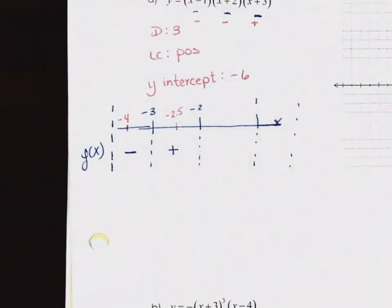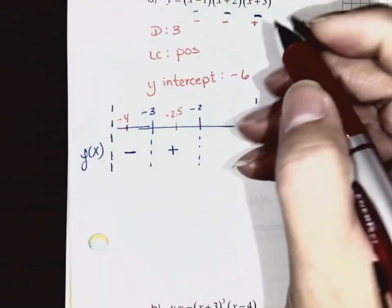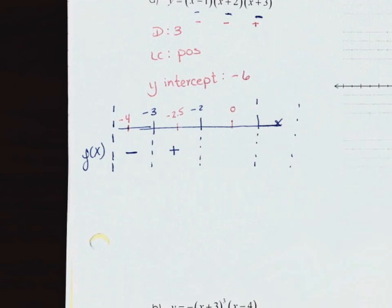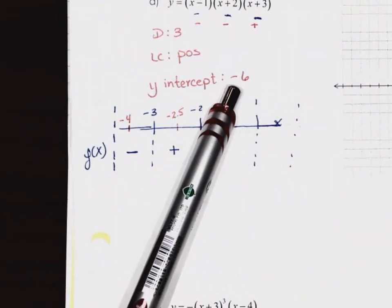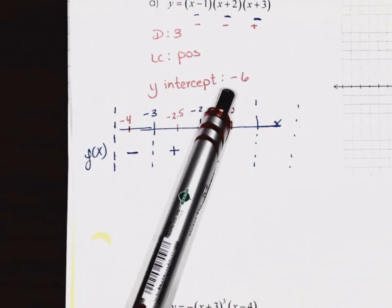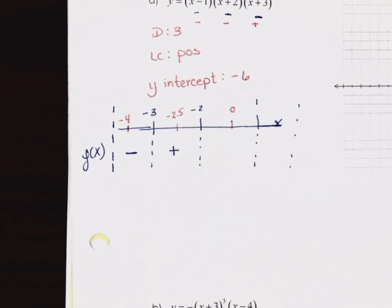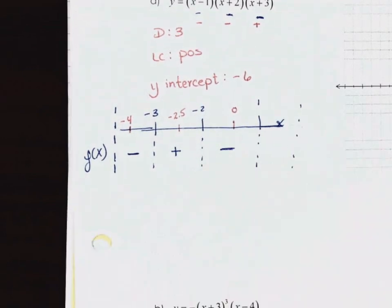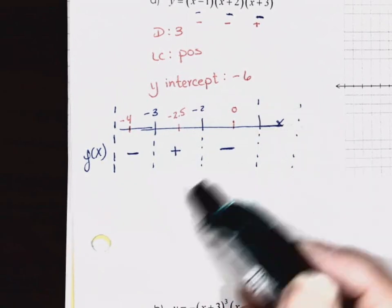A value between negative 2 and 1 — pick 0, which we already did: that's your y-intercept of negative 6, so it's negative. And a value greater than 1 — use 2. All three binomials give positive, and three positives give positive.